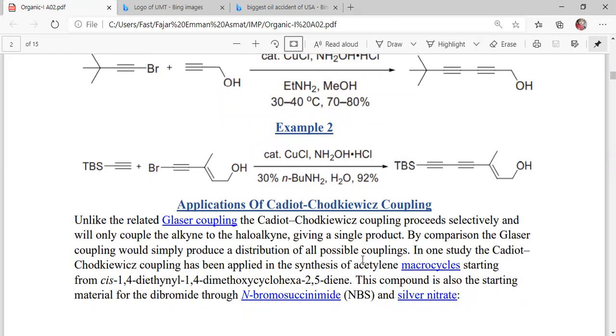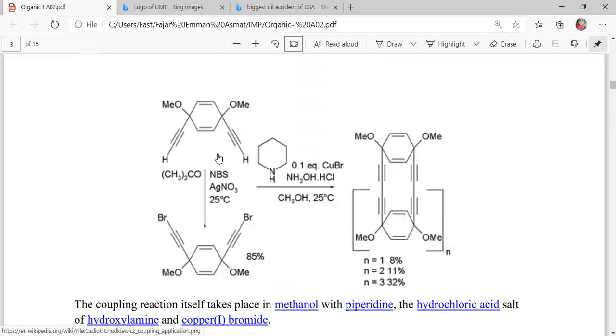This section shows that 1,4-diethinyl-1,4-dimethoxycyclohexa-2,5-diene is used to form acetylene macrocycles. This material also undergoes a reaction in the presence of silver nitrate at 25 degrees Celsius temperature to form N-bromosuccinimide.